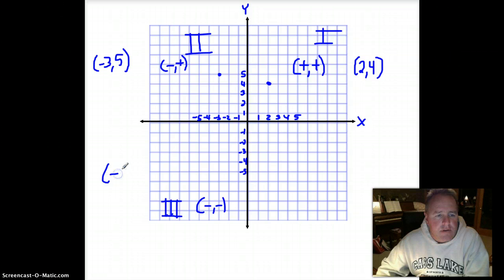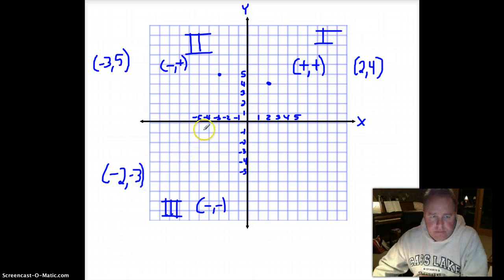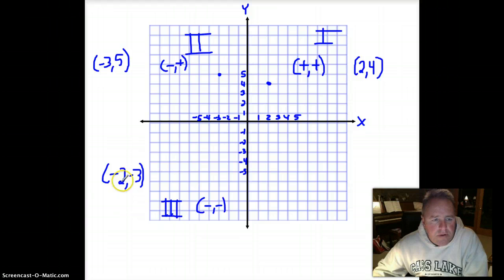Okay. So my first number in my ordered pair is along my x-axis, negative two, and then down to a negative three. So that's where my graphing point would be there. A negative x, a negative y.